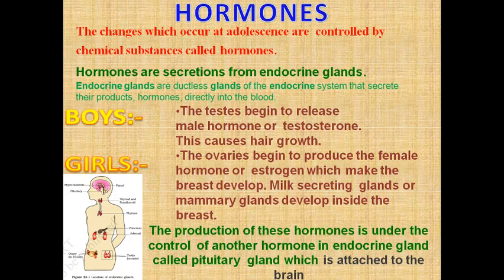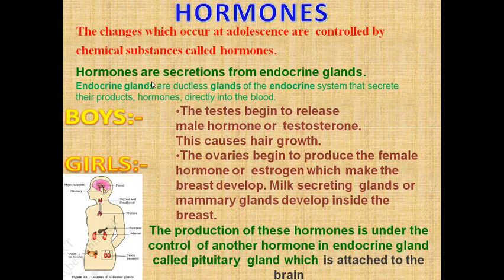On the onset of puberty, in boys the reproductive organs — testes — begin to release the male hormone testosterone. This helps cause the development of secondary sexual characters in boys. In girls, the ovaries begin to produce the female hormone estrogen, which makes the breasts develop and the milk-secreting glands develop inside the breast.